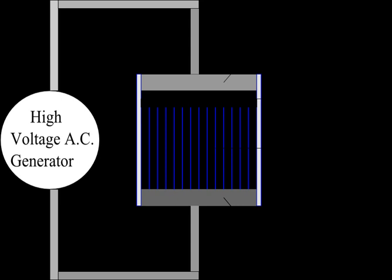Dielectric barrier discharge is the electrical discharge between two electrodes separated by an insulating dielectric barrier. Originally called silent discharge and also known as ozone production discharge or partial discharge, it was first reported by Ernst Werner von Siemens in 1857.